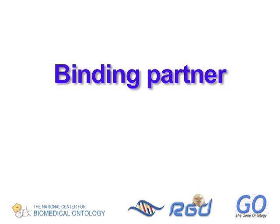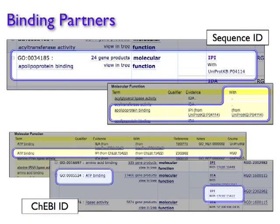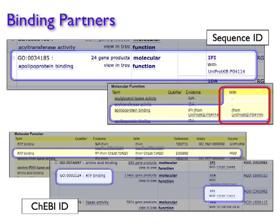In such cases, the annotation often includes an identifier for the binding partner, such as a sequence ID for a gene product, or an ID from a database like PubChem or ChEBI, the Chemical Entities of Biological Interest database, for molecules like ATP and metal ions. These IDs are often displayed as part of the evidence code. Alternatively, they can be located in a separate column or field, sometimes referred to as the With field,